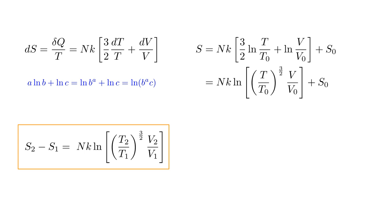Replace T zero, V zero, and S zero with T one, V one, and S one. Move S one to the left side, and replace S, T and V with S two, T two, and V two. Then, we have S two minus S one equals NK log of the quantity T two over T one to the three-halves, times V two over V one. This tells us what the change in entropy is in going from state one, with temperature T one and volume V one, to state two, with temperature T two and volume V two.